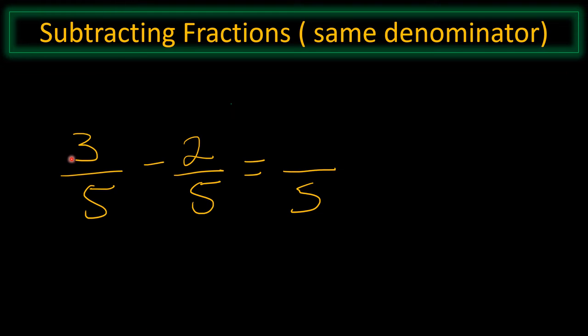All we have to do now is just subtract the numerator. So 3 minus 2 is 1, and thus the answer would be 1 fifth.